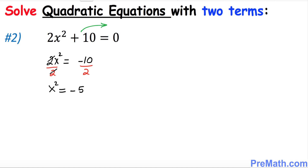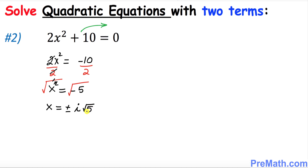So far so good. Now we want to get rid of this square. We can undo this square by taking the square root on both sides. This square and square root undo each other, and we get x equal to positive or negative i times square root of 5.